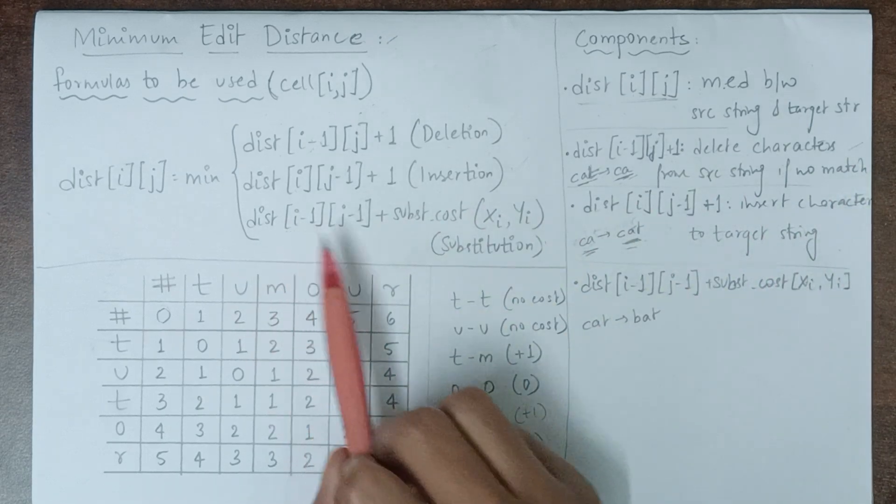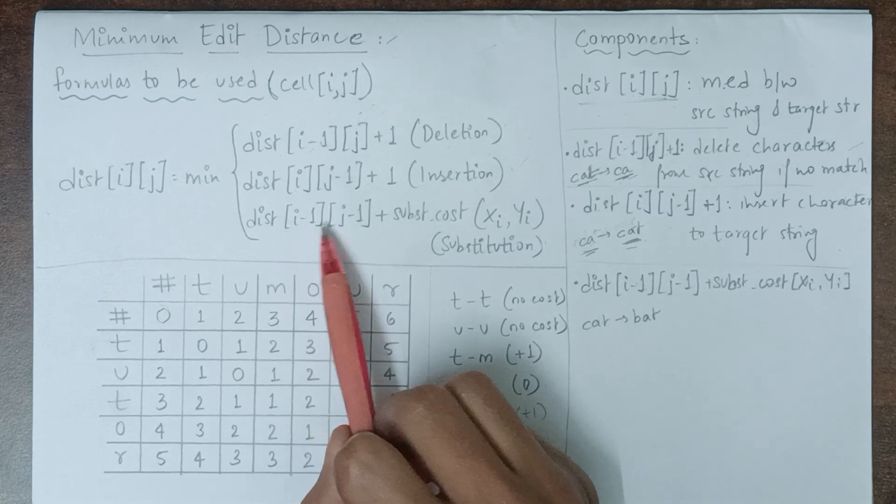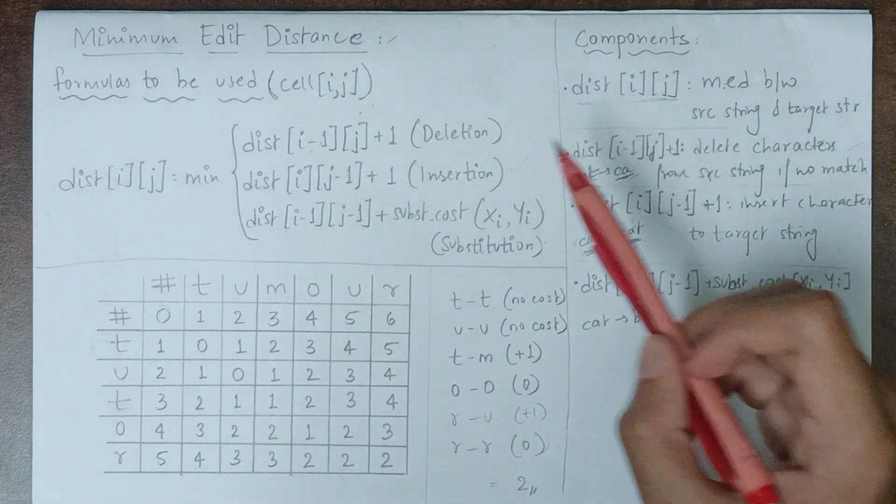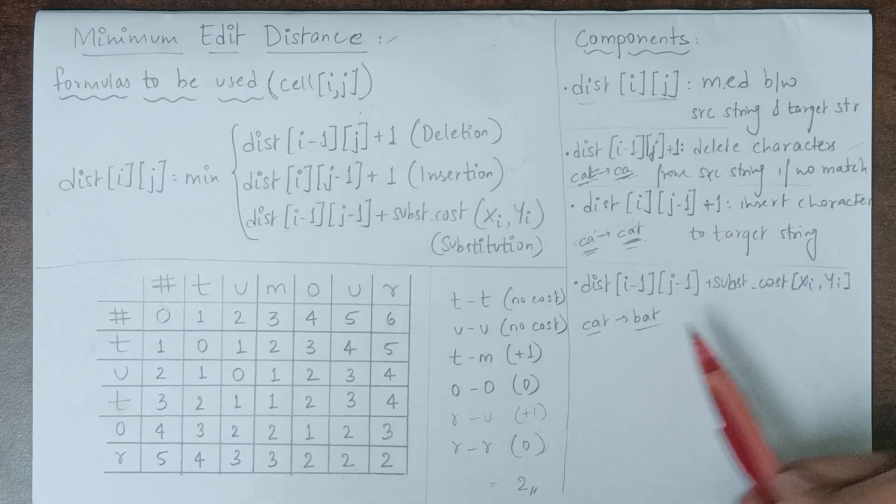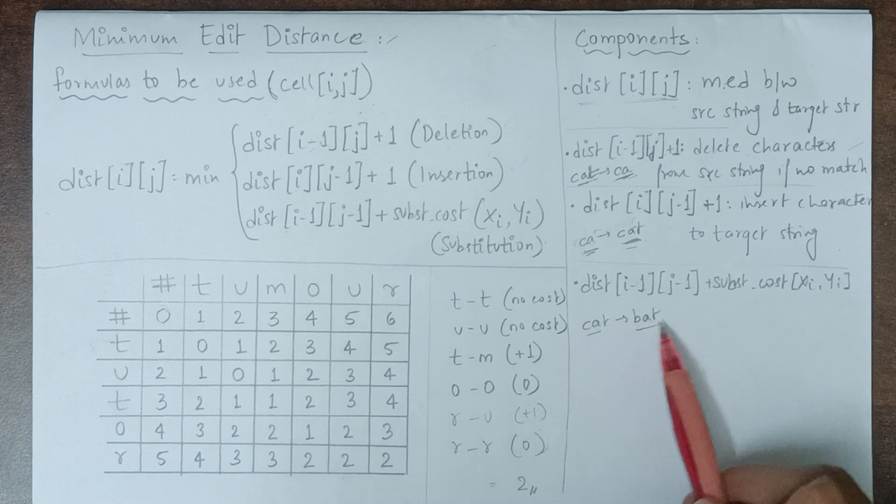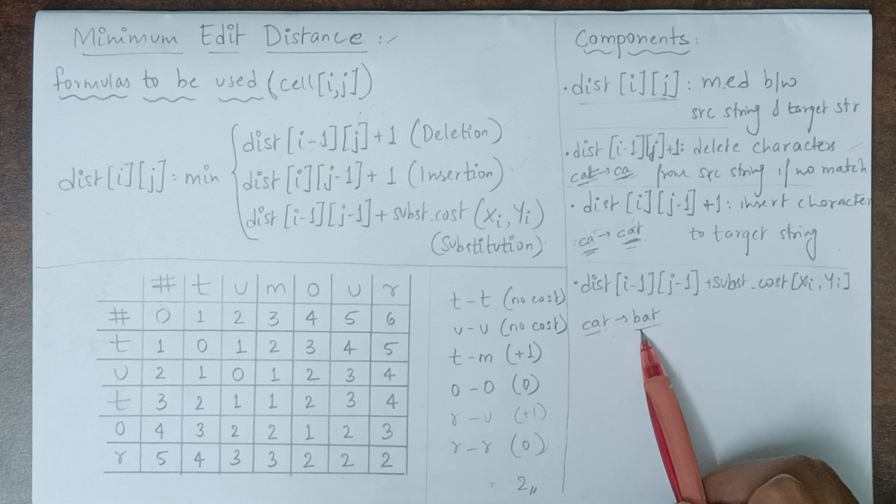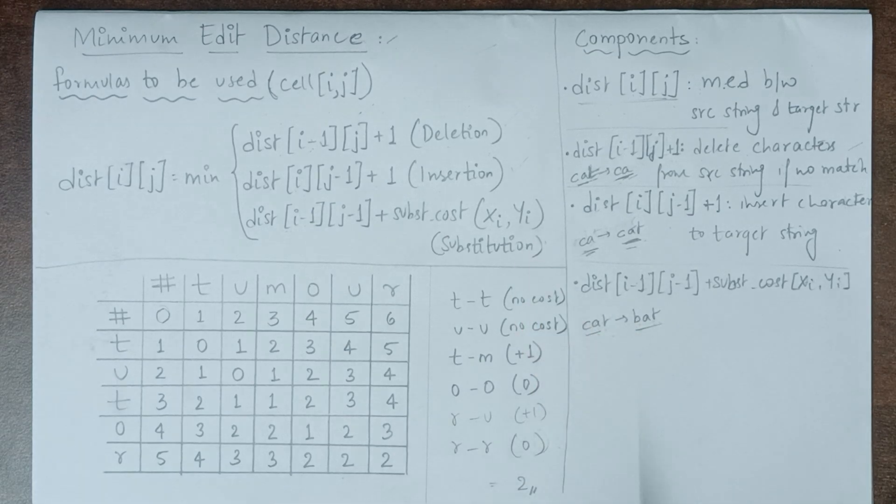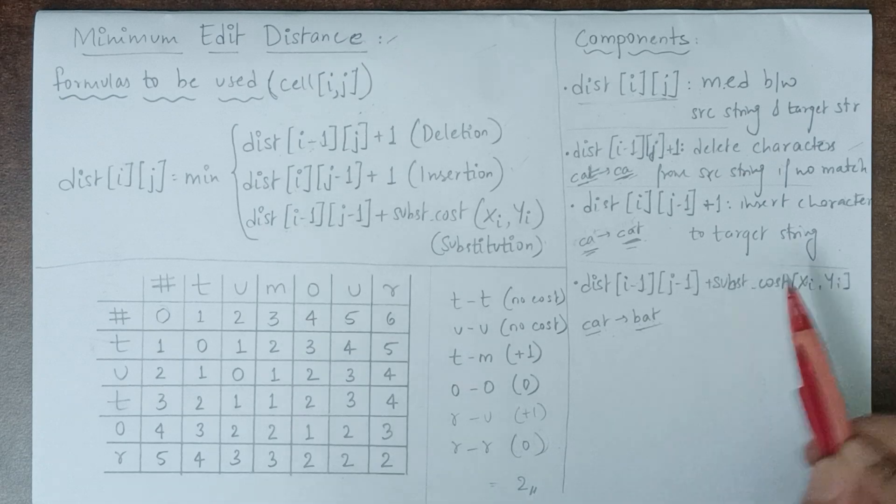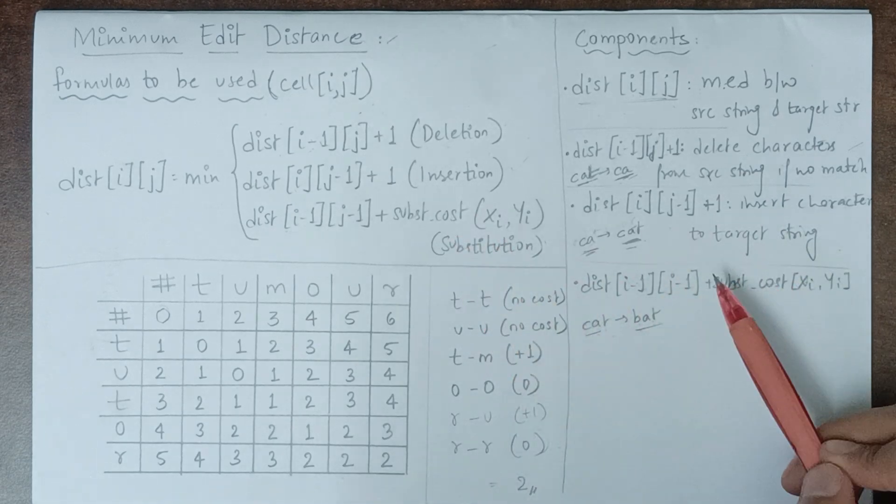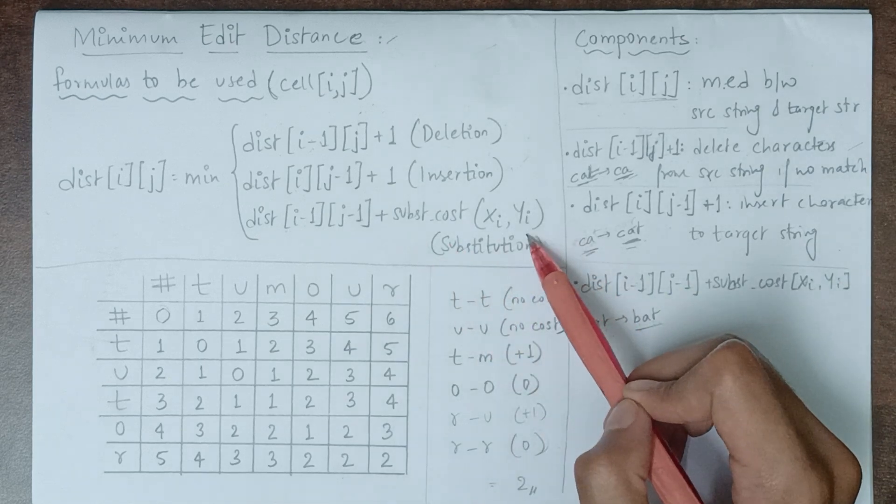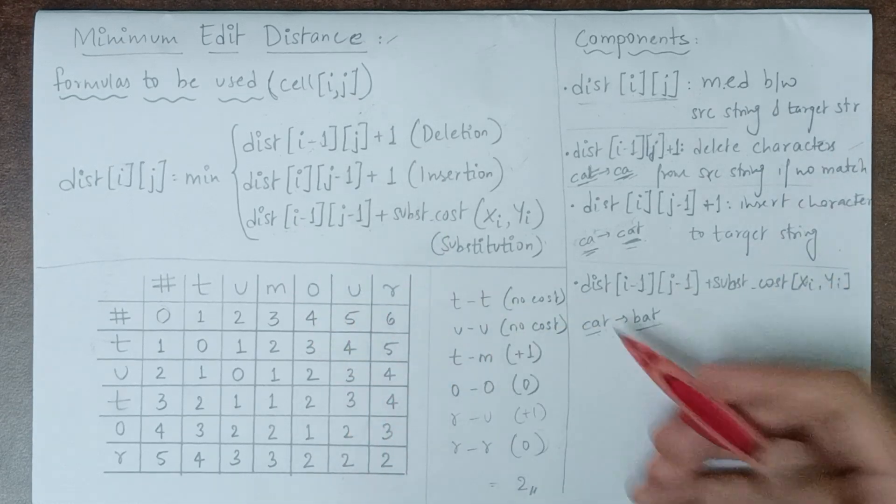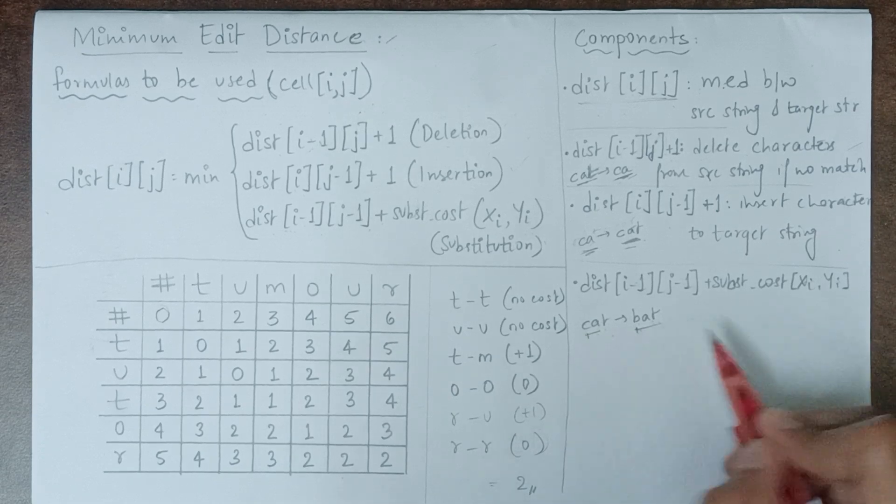Now for substitution, the formula is distance[i-1, j-1] plus the substitution cost of xi and yi. For example, with 'cat' and 'bat', the other two letters are the same while the first letter changes from 'c' to 'b'. To convert c to b, we use substitution. If the characters match, the substitution cost is 0, but if they don't match, the cost is 1. In this case, the substitution cost will be distance[i-1, j-1] + 1 because there's a difference between c and b.